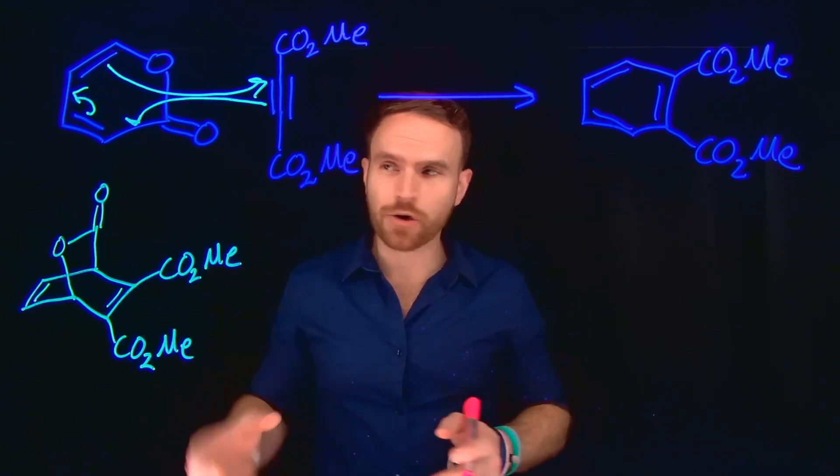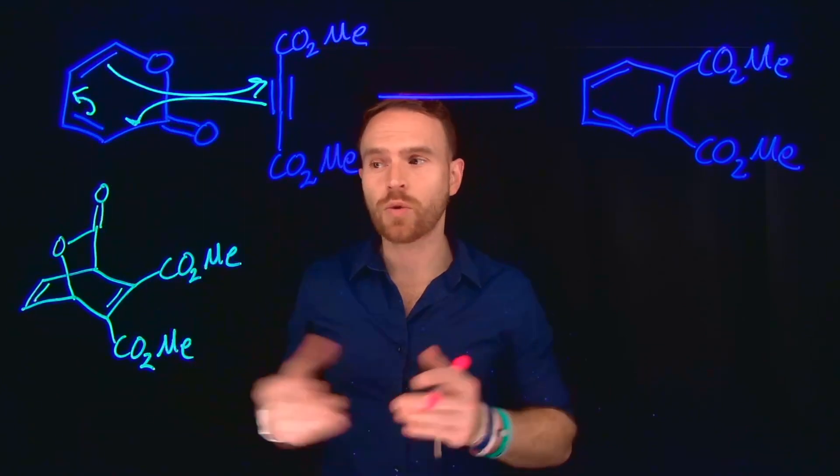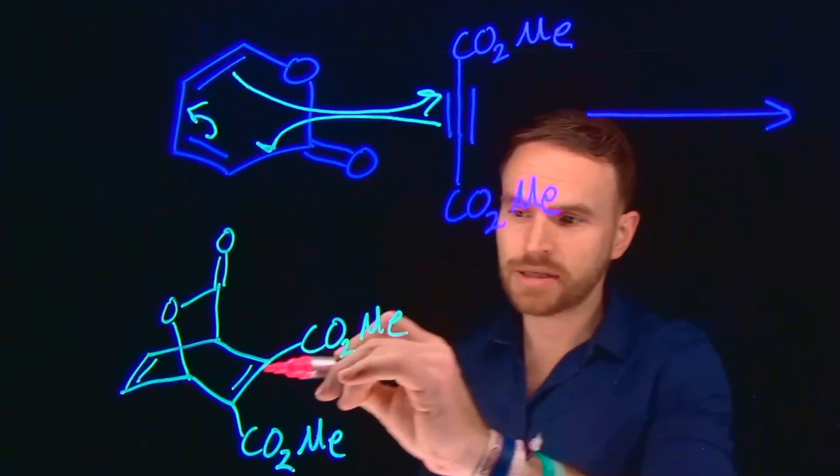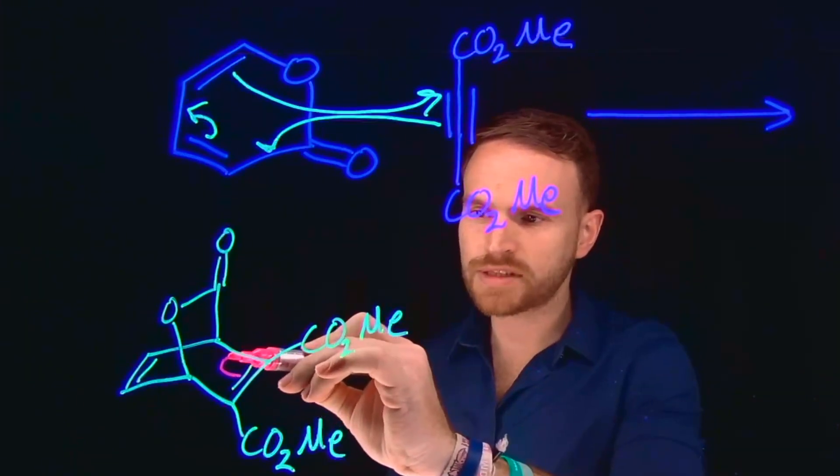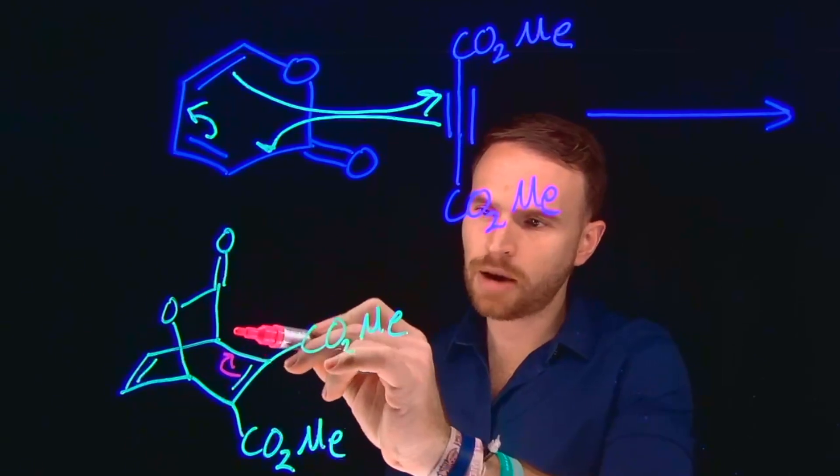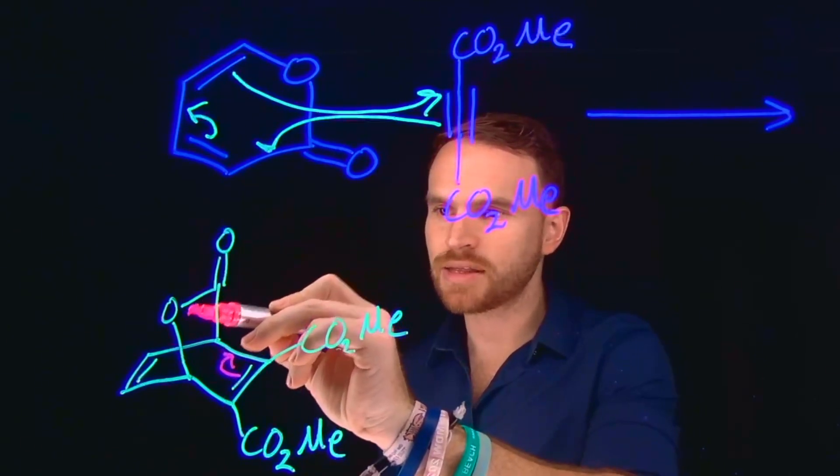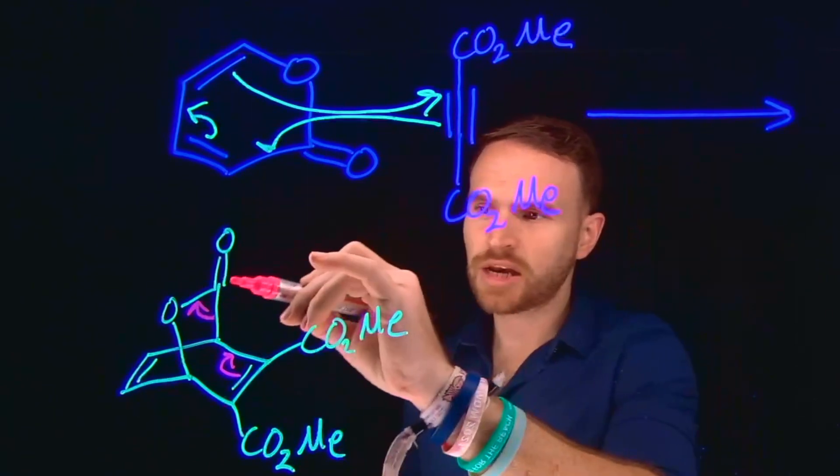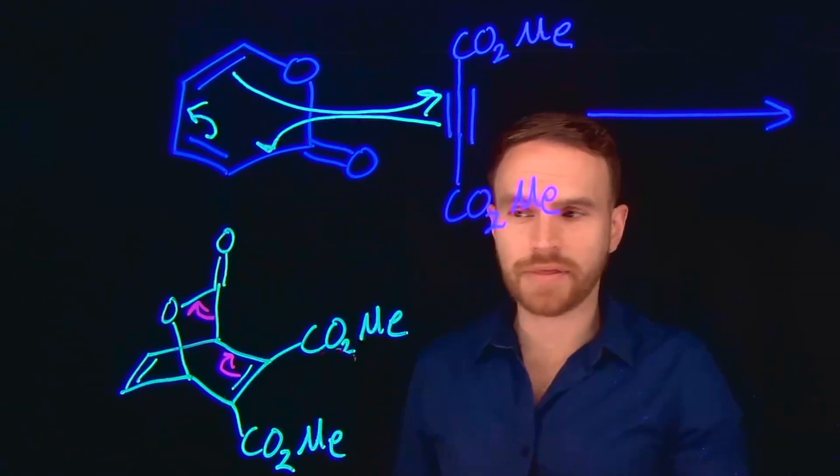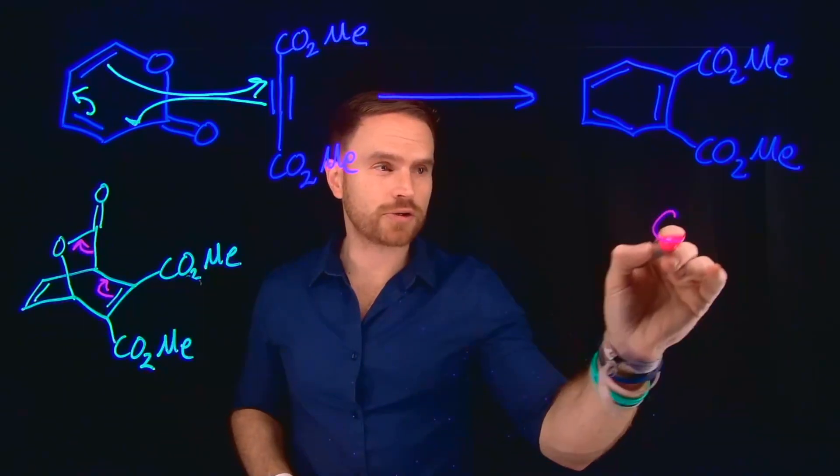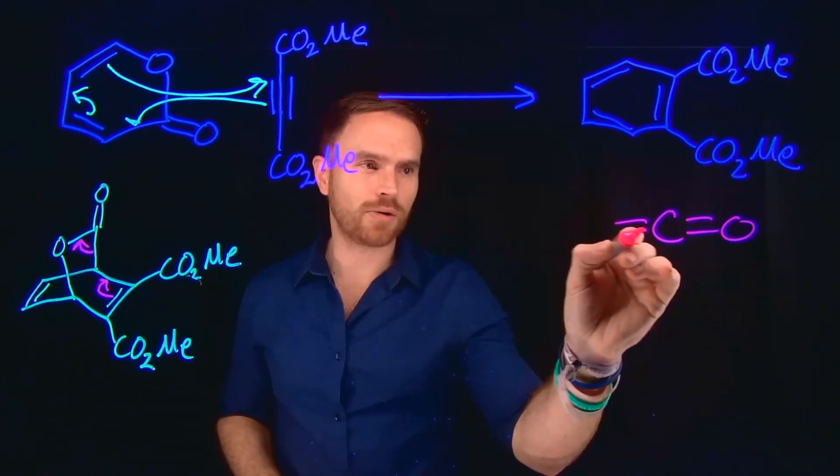However, rather than generating back to our starting materials, you should notice that we have the potential to generate a good leaving group. What can happen here is these pi electrons can move to this position, freeing up this carbon-to-carbon bond by moving these electrons to this location. And in doing so, this is going to make a carbon-to-oxygen double bond there, and a carbon-to-oxygen double bond here, which should seem familiar to you because that's exactly what CO2 gas is.